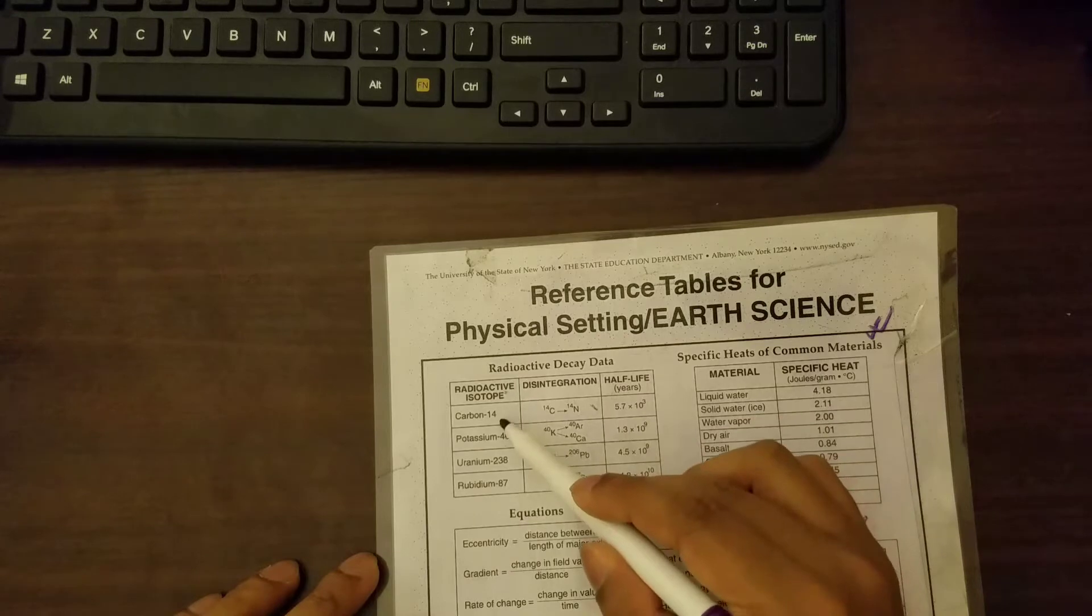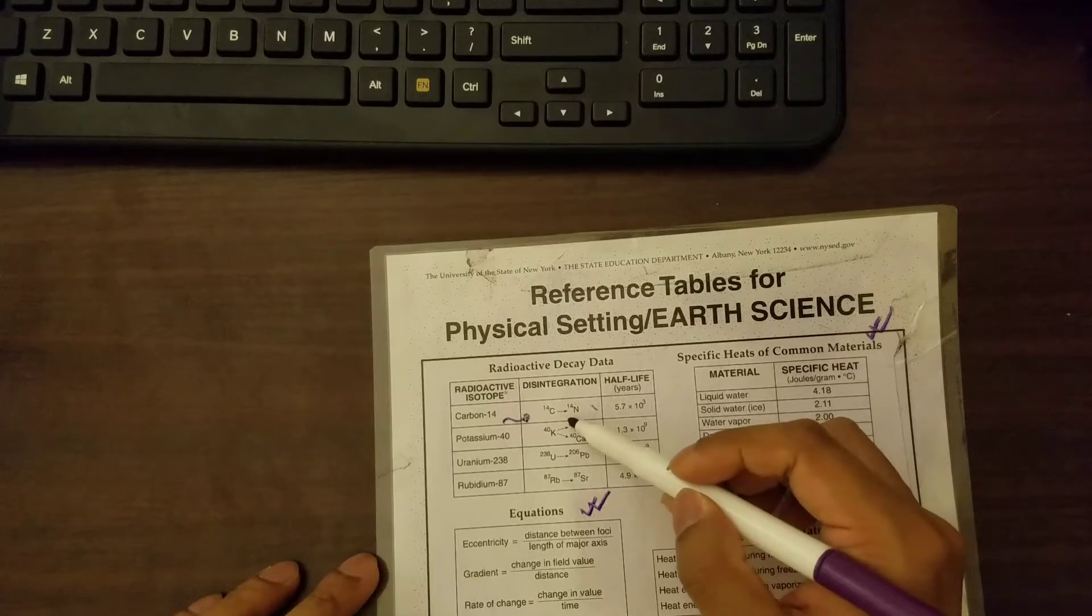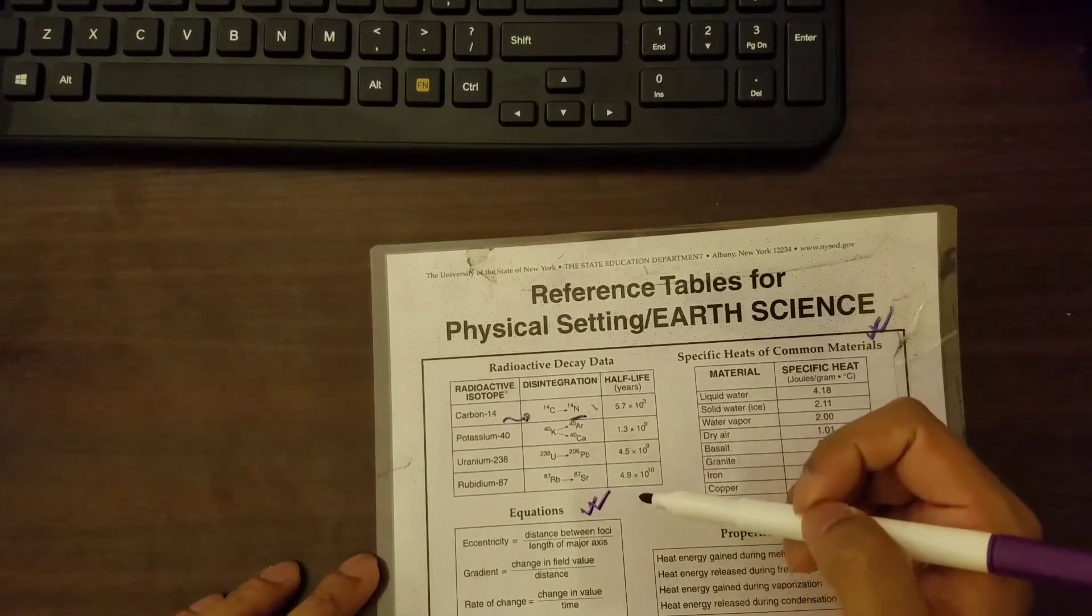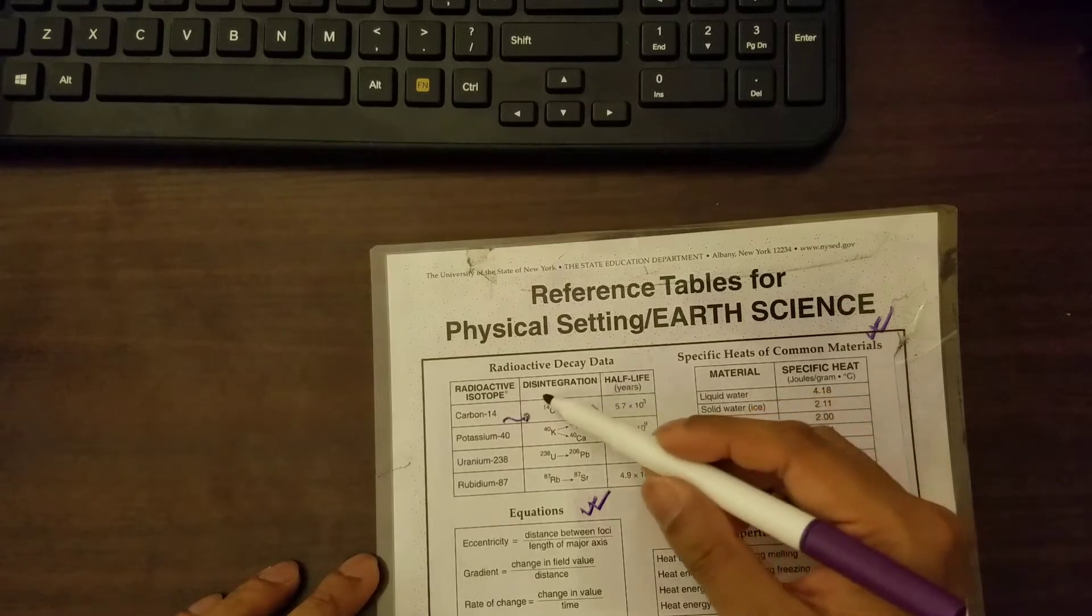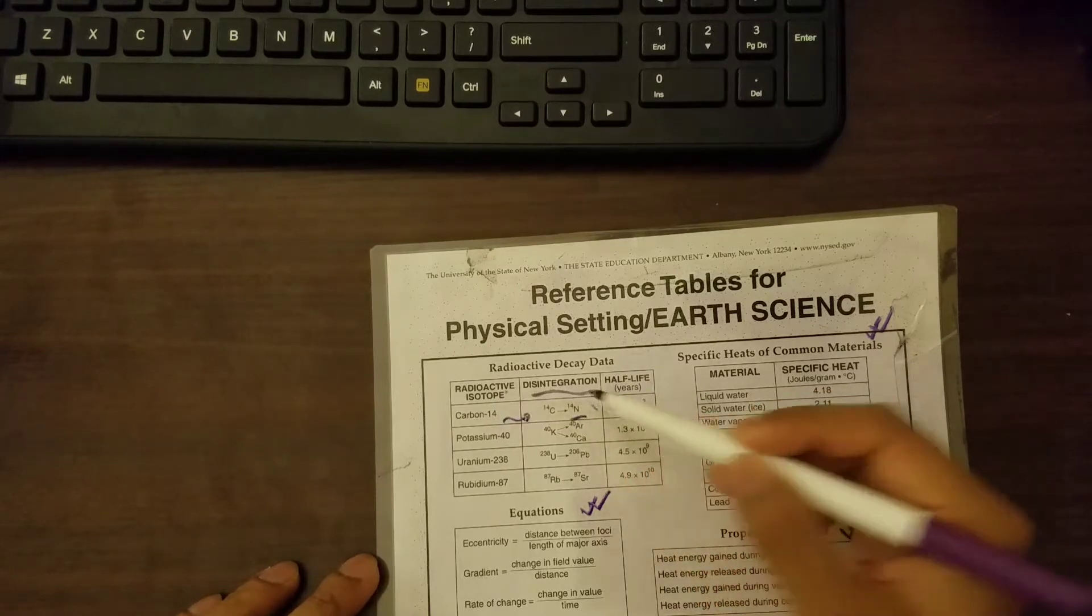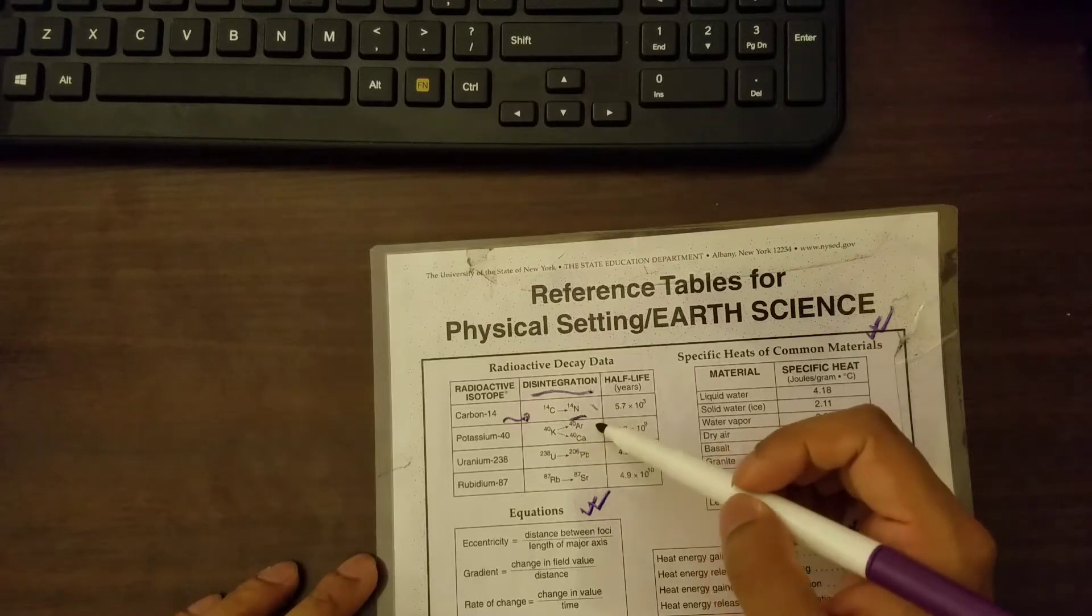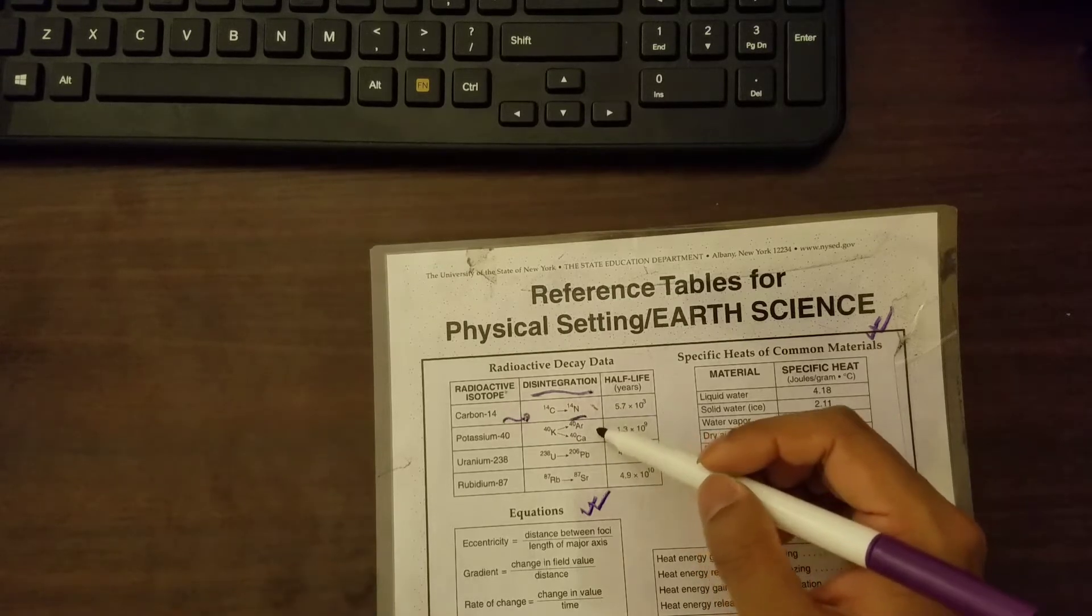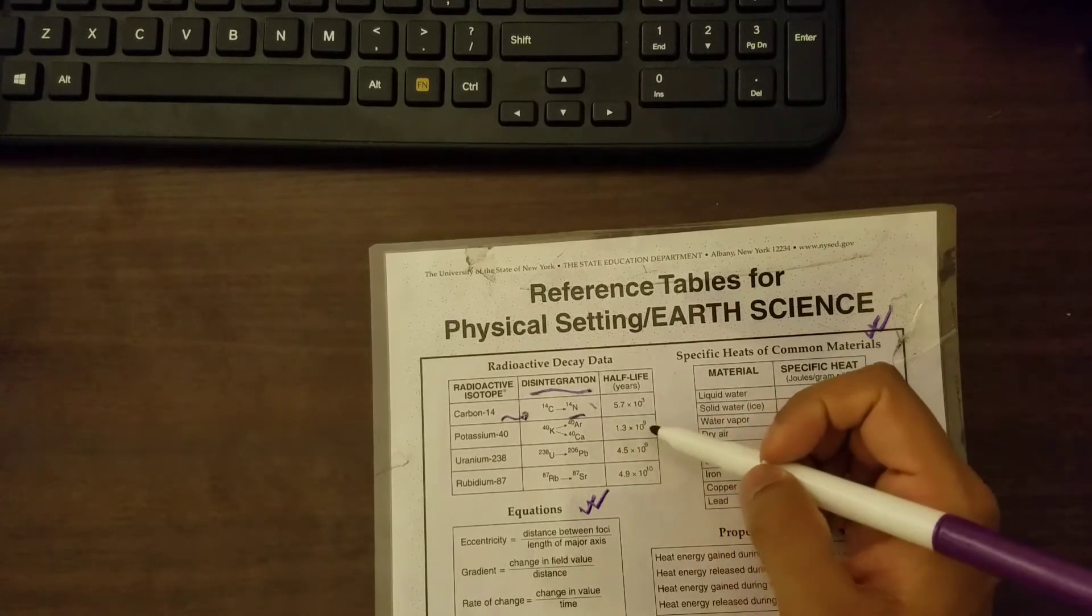For example, you can see carbon-14 becomes nitrogen. And this process is called disintegration, as you can see the name of the column. Potassium, you can see it may become two different non-radioactive elements.